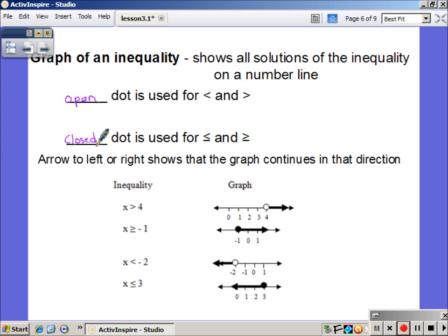We do shade to show that all the values to that side, either left or right, are solutions. So we have x is greater than 4, no or equal to, open dot, greater than, numbers bigger than 4, shading to the right.